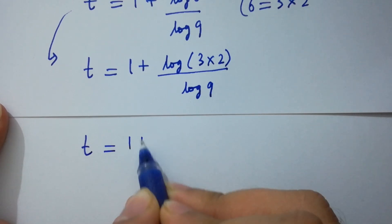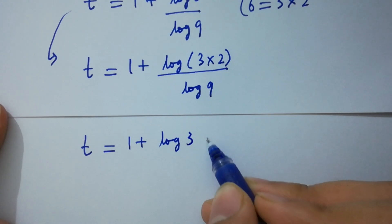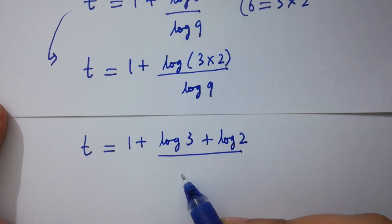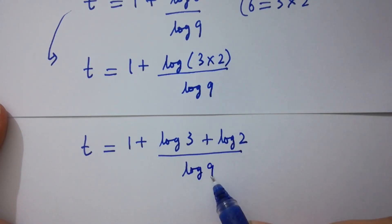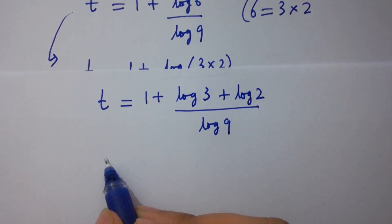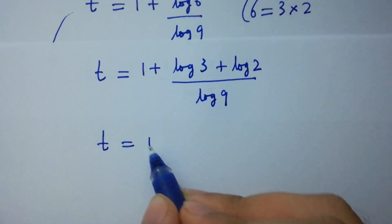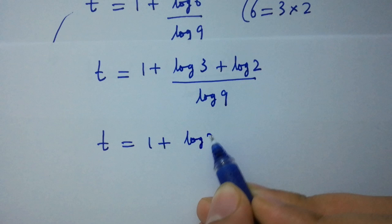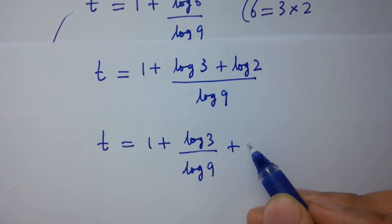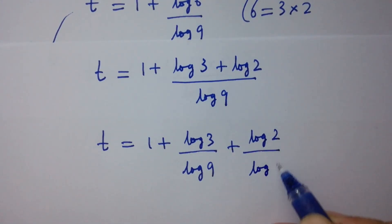t equals 1 plus (log 3 plus log 2) over log 9. Separating: 1 plus log 3 over log 9 plus log 2 over log 9.